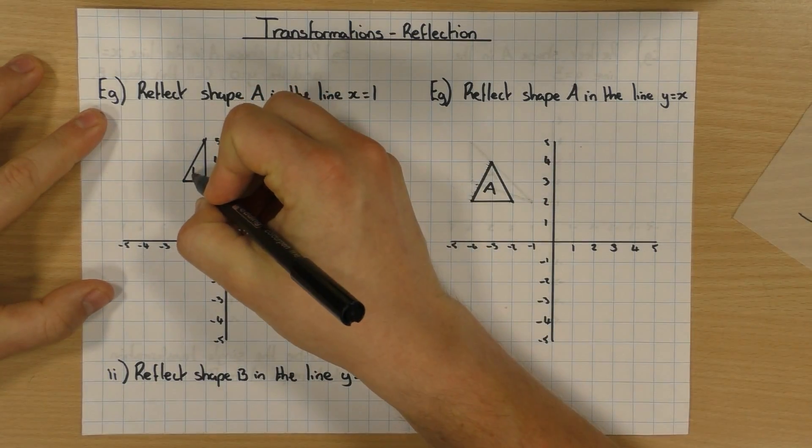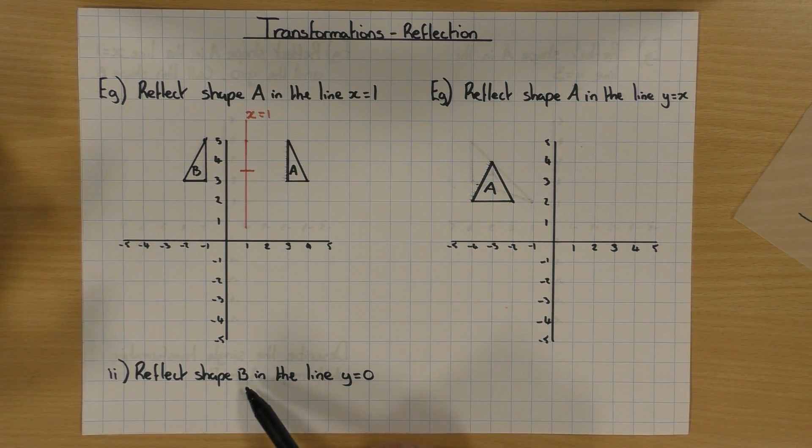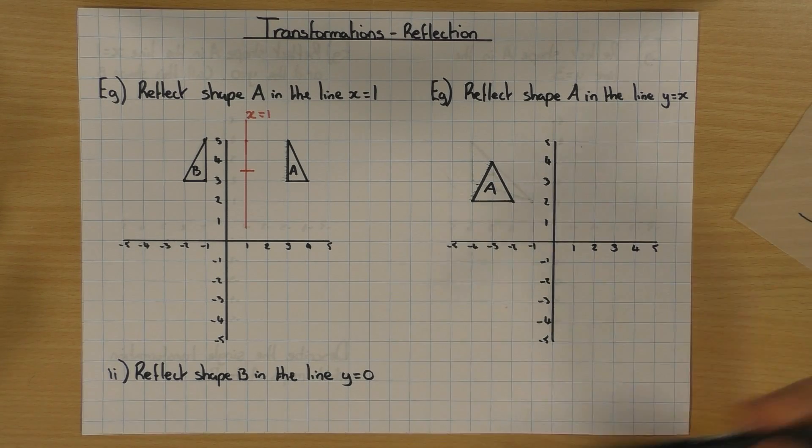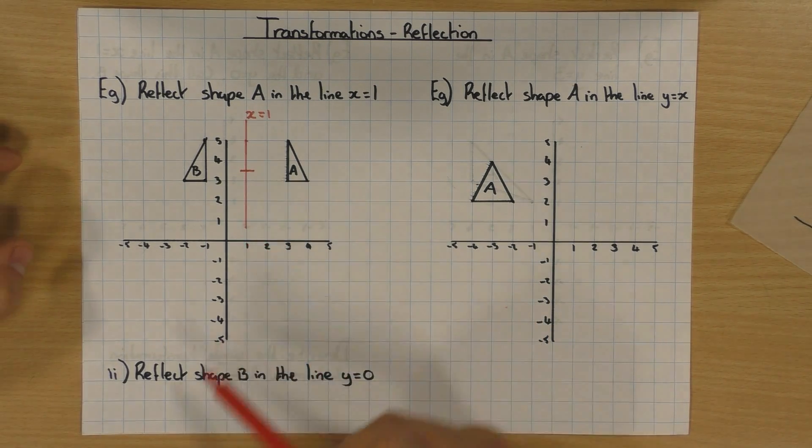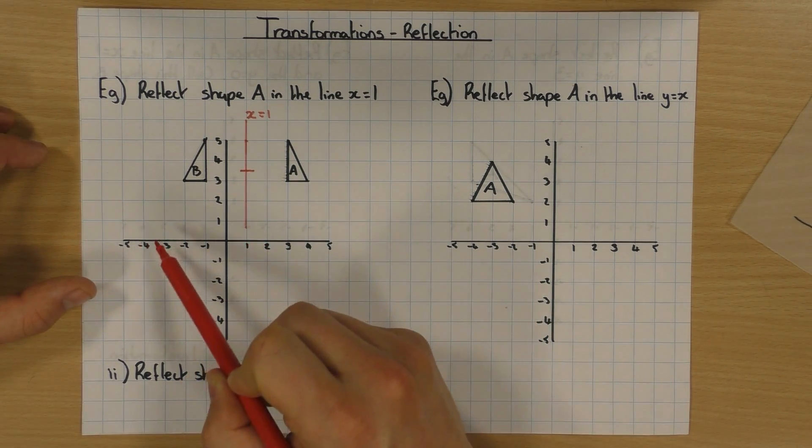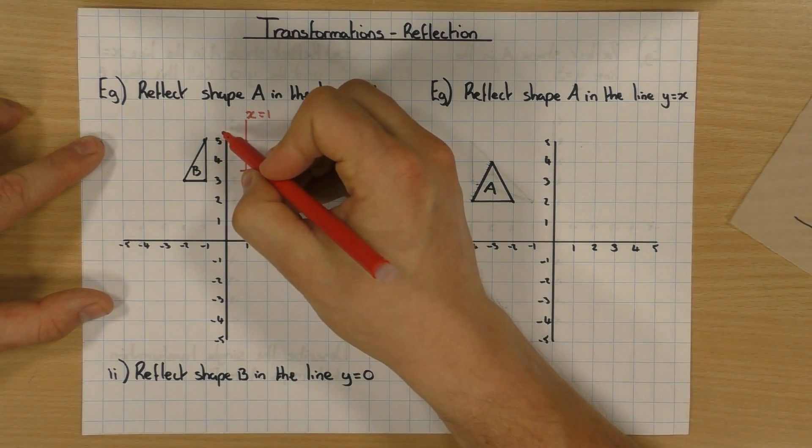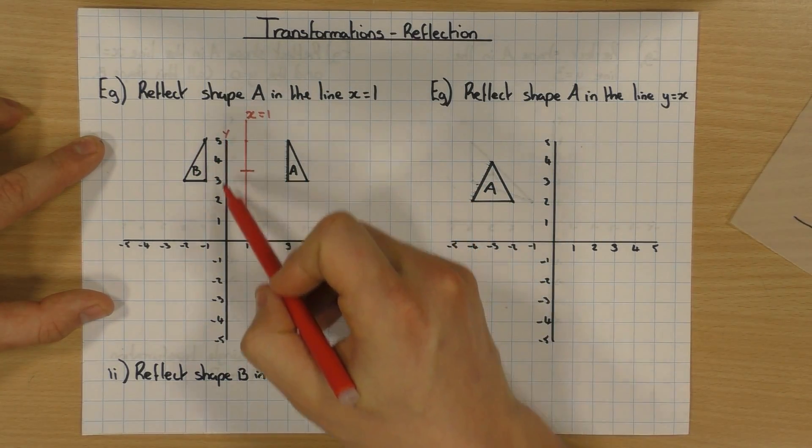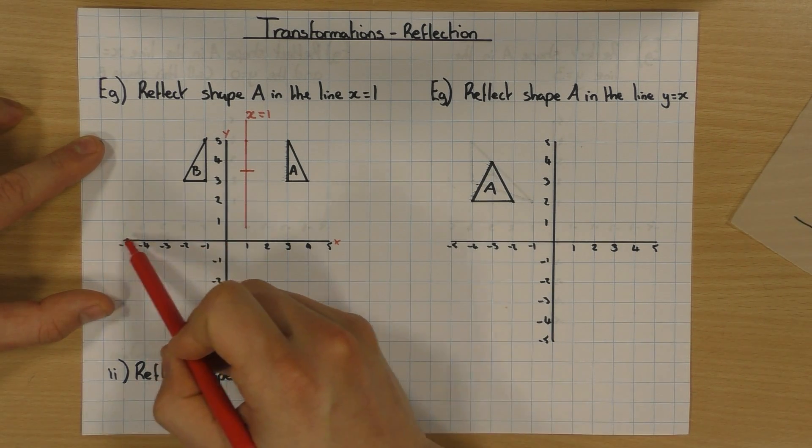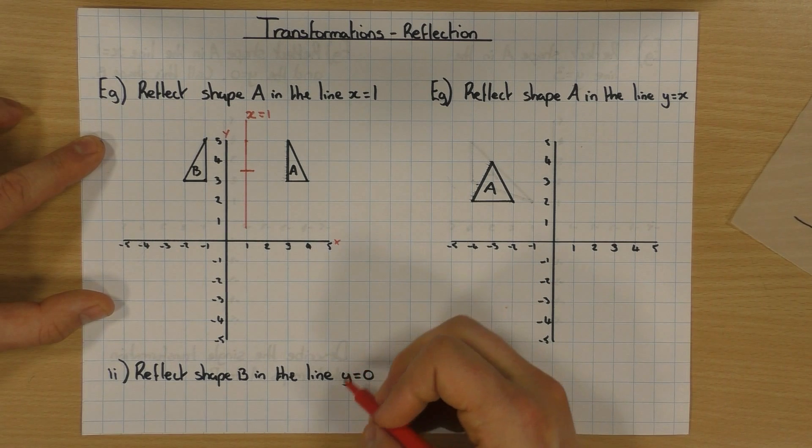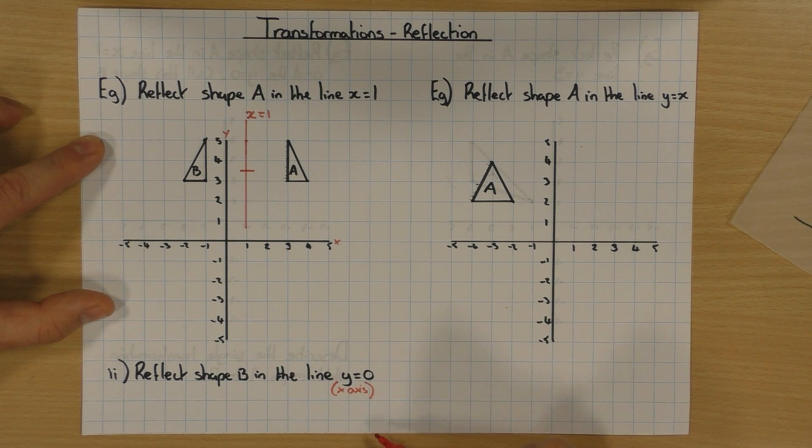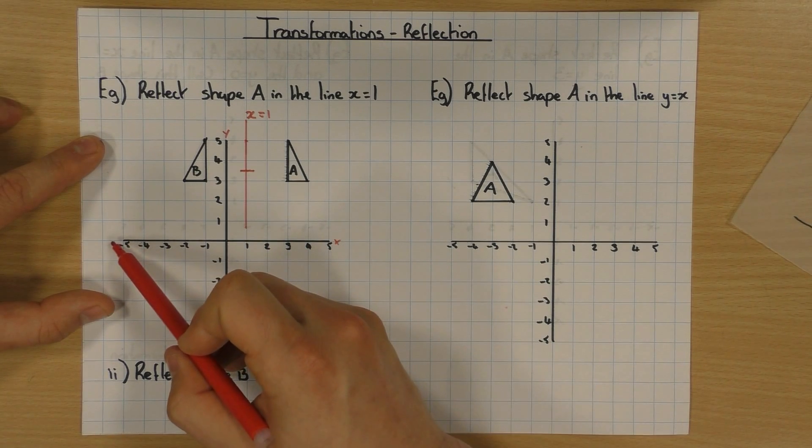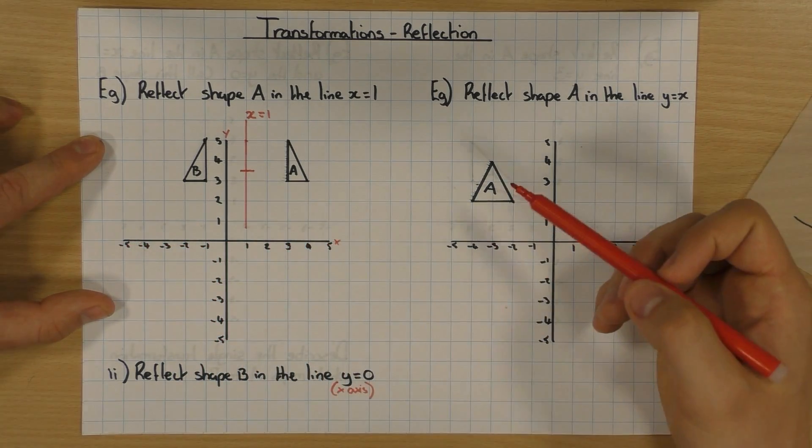I'm going to call it B, because the next bit here reflects shape B in the line Y equals 0. So just like before, if X equals 1 goes through the X axis of 1, the line Y equals 0 goes through the Y axis. So this is obviously the Y axis, this is the X axis. It goes through the Y axis at 0. Well, Y equals 0 is here, so it's this line here. It's also known as the X axis, which is what causes confusion sometimes. Sometimes I might say reflect it in the X axis or Y equals 0. So Y equals 0 is where the line crosses the Y axis at 0, it's also called the X axis, okay?